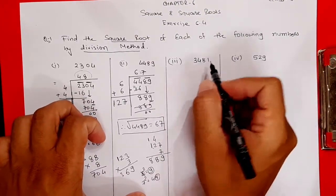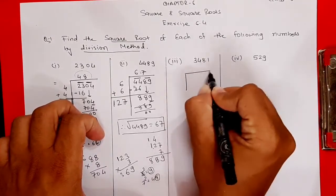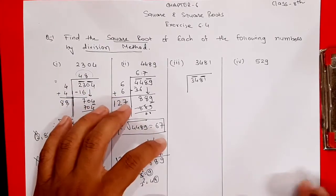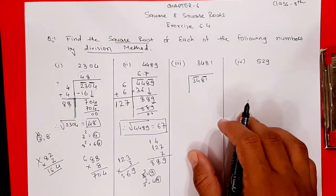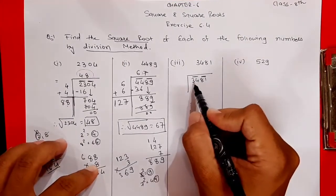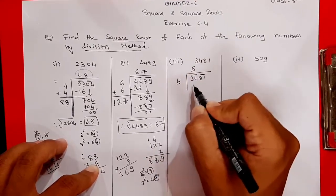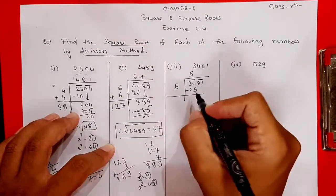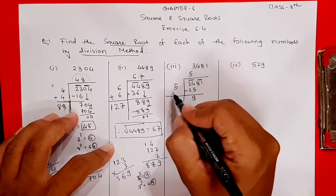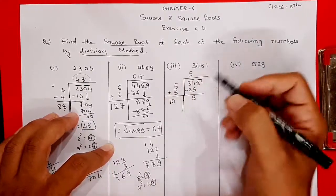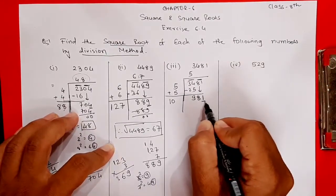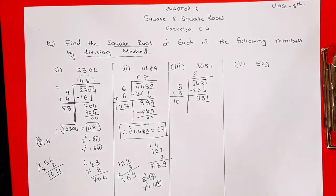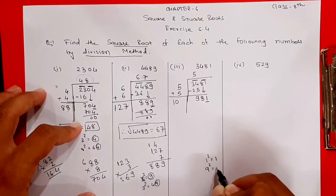Moving to the third question, that is 3481. First write the number, then make groups of two digits from the back. Say squares: 4²=16, 5²=25, 6²=36 — 36 exceeds 34, so write 5, five squared is 25. Subtract 25 from 34, you get 9. Add 5 + 5 = 10. Bring down the group 81. Check the last digit — it is 1.